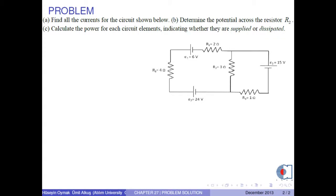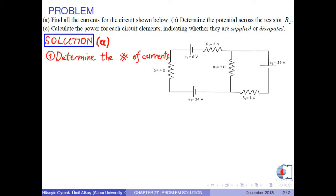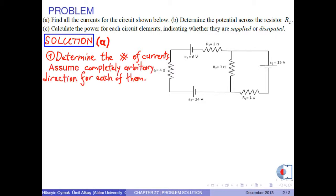Part A: Find all the currents for the circuit shown below. In order to solve this part, we use the following procedure. First, determine the number of currents and assume completely arbitrary directions for each of them. Let I1, I2, and I3 be the currents for this circuit.